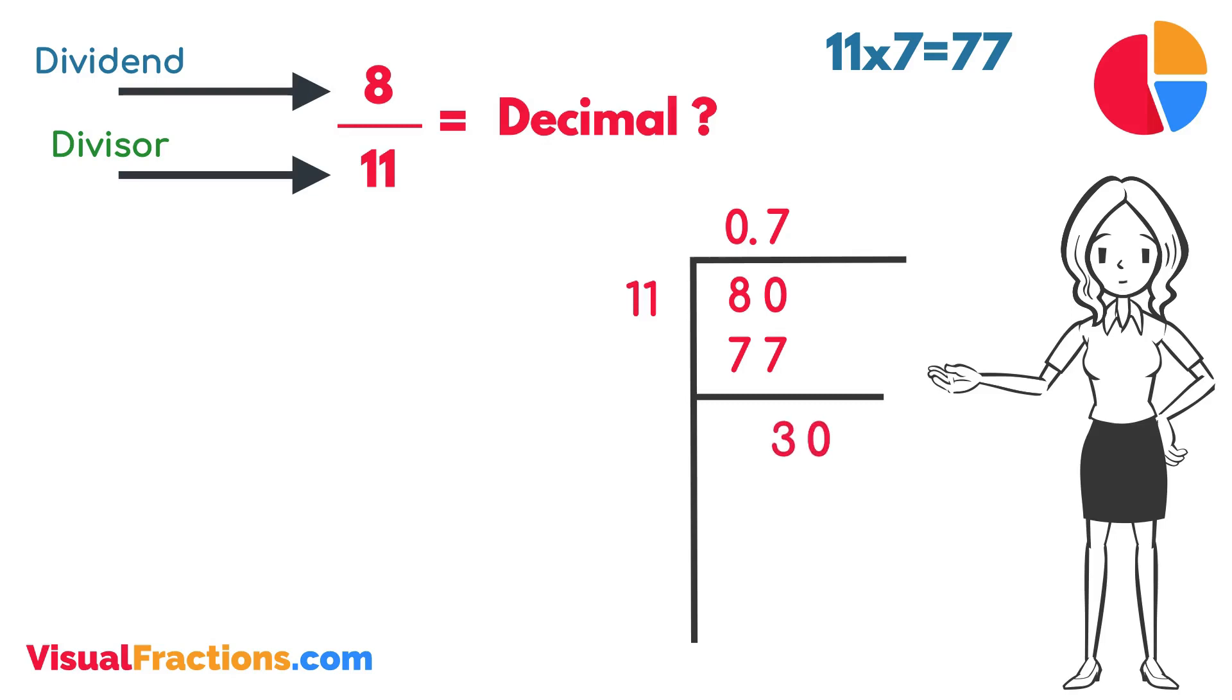Next, we add another 0 to the remainder, making it 30. How many times does 11 go into 30? It goes in 2 times, which we write next to the 7 in our quotient, giving us 0.72. Multiplying 11 by 2 gives us 22. We subtract 22 from 30 to get a remainder of 8.